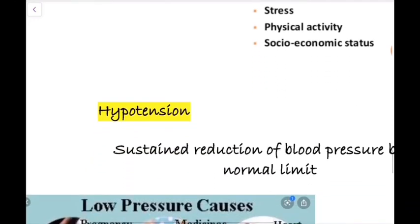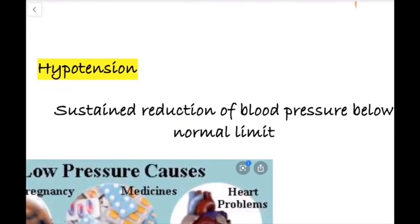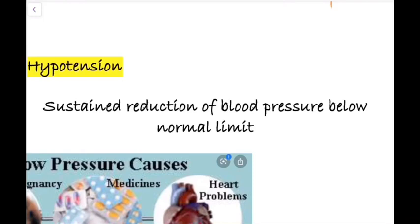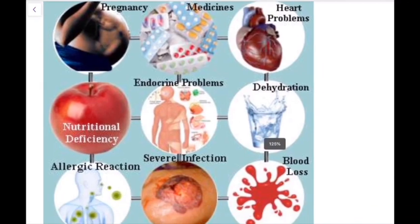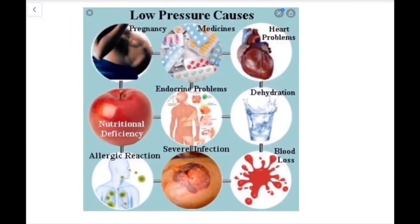Next we will talk about hypotension, which is the opposite of hypertension — a sustained reduction of blood pressure below normal limits. This usually occurs secondary to something else. A few important causes include blood loss: following an accident or injury, bleeding reduces blood volume in the vascular system and can lead to hypotension. In shock, such as dengue hemorrhagic fever or dengue shock, plasma leakage into the tissues reduces blood volume inside the vessels, leading to hypotension.